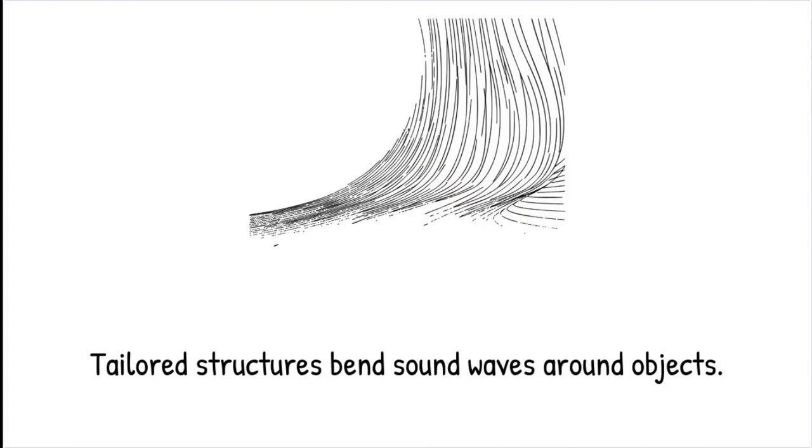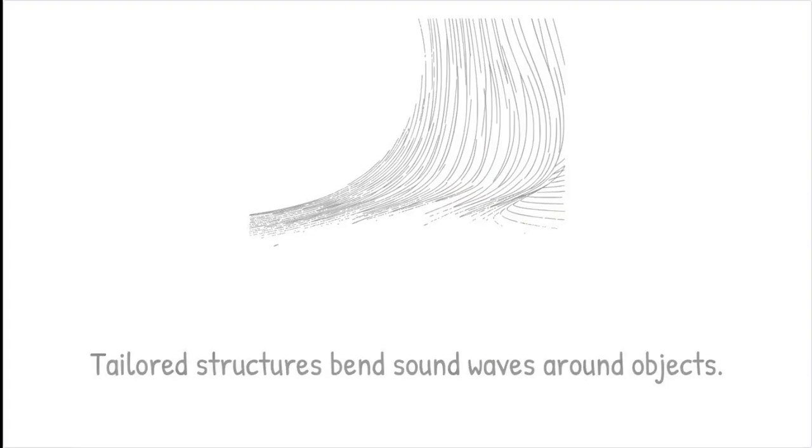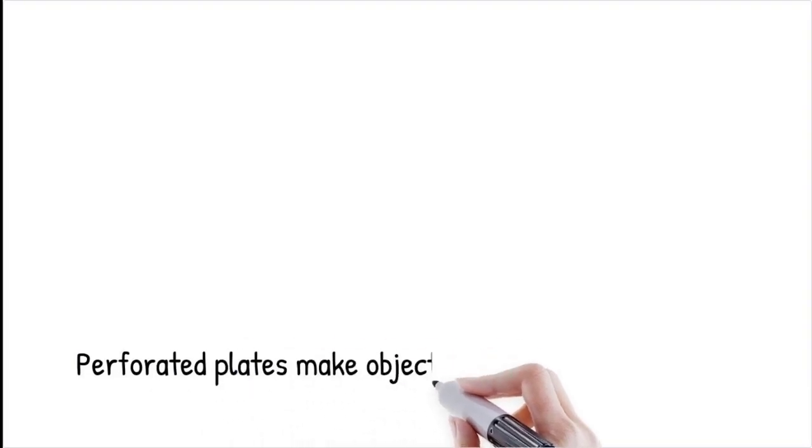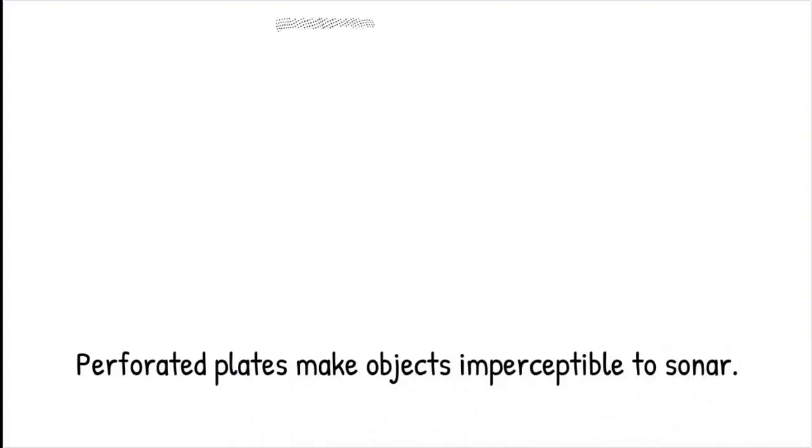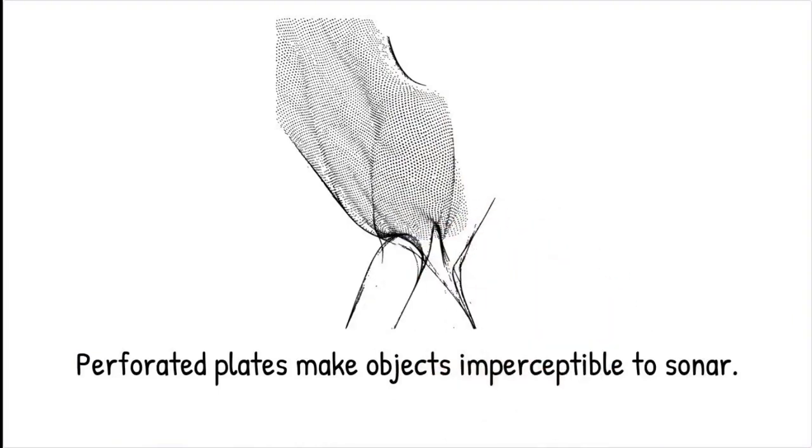In a recent study, researchers developed an acoustic cloak from perforated plastic plates that redirect sound waves around a hidden object, making it imperceptible to sonar detection. Acoustic metamaterials work like a stealth mode for sound, guiding waves around an object the way traffic is redirected around a roadblock without stopping the flow.